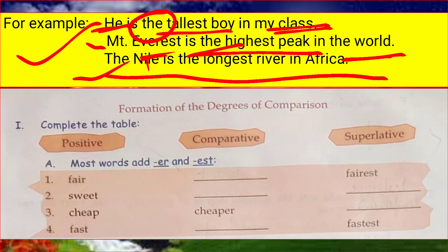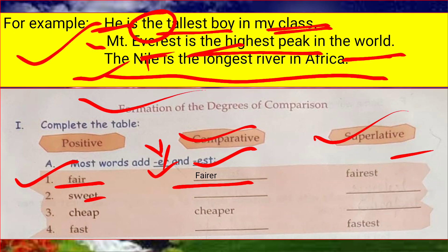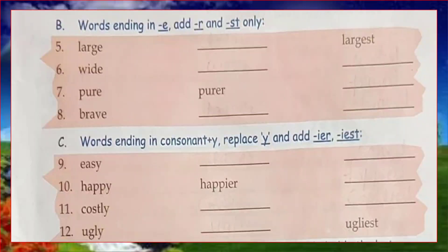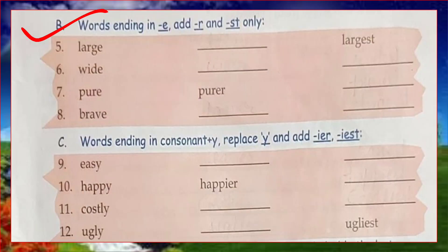Now let's look at the formation of degrees of comparison. For simple words, you add -er for comparative and -est for superlative. For example: fair → fairer → fairest; sweet → sweeter → sweetest; cheap → cheaper → cheapest; fast → faster → fastest.